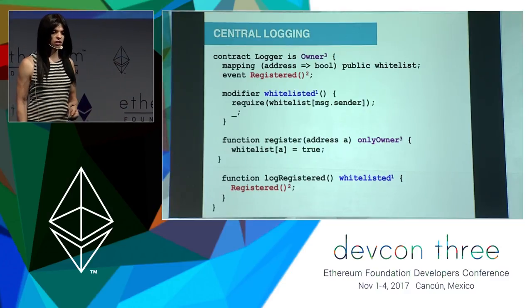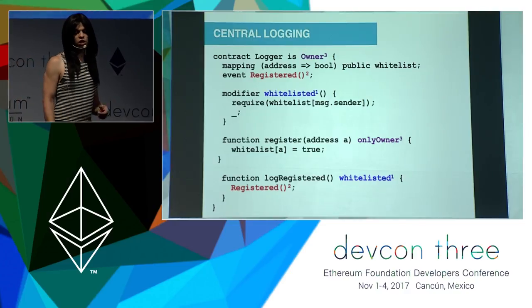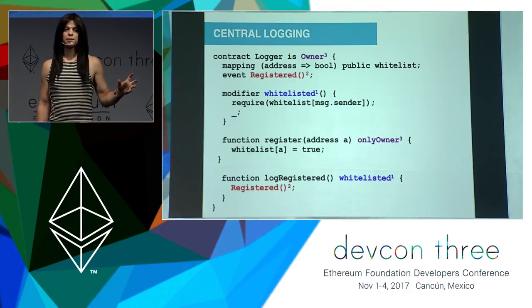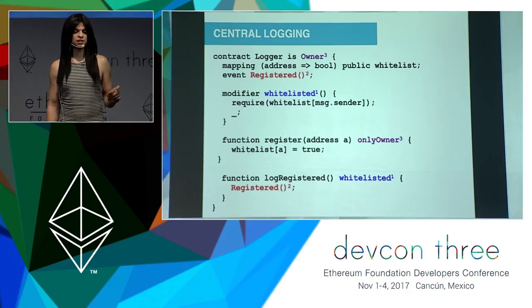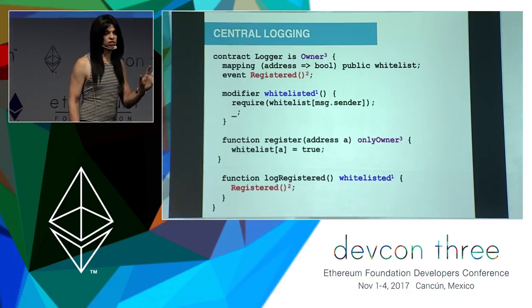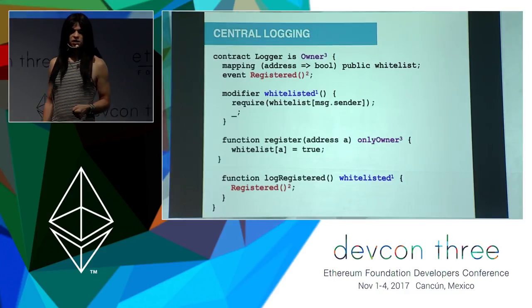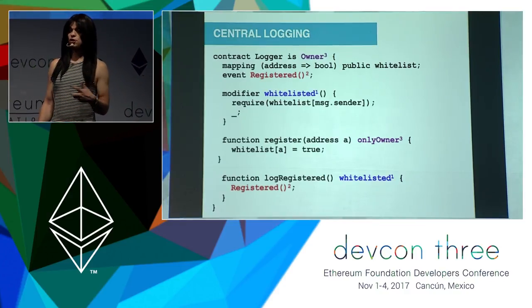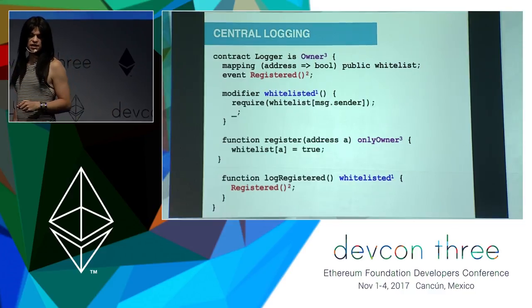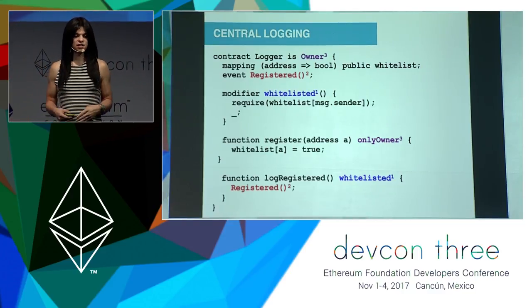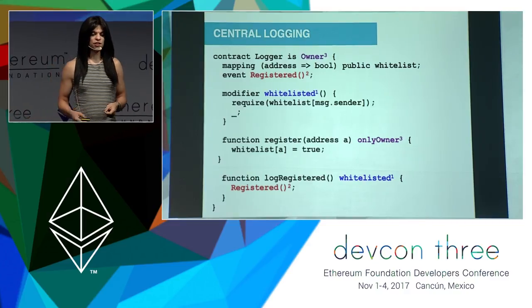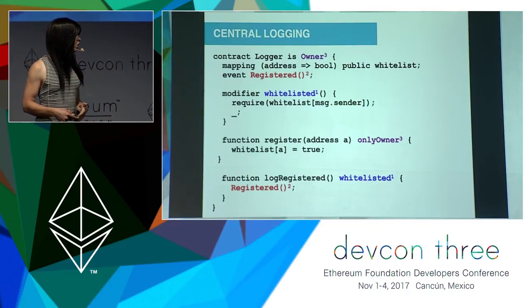Let me show you how that looks. Here's an example of the logger contract. What we have here is a whitelist that maps addresses of contracts to a simple Boolean that says whether it's been approved or not. So this is where it handles multiple contracts — those addresses are of contracts. You have a modifier that's a simple requirement that the sender is indeed in that whitelist. The modifier 'whitelisted' is provided here. And then you can have any event — here the event is called 'registered', that's the red text with the two superscripts.